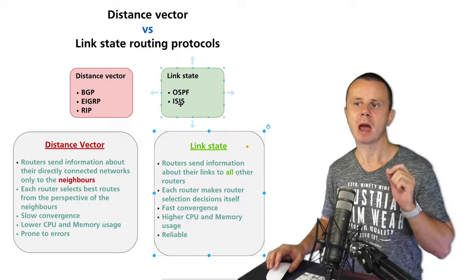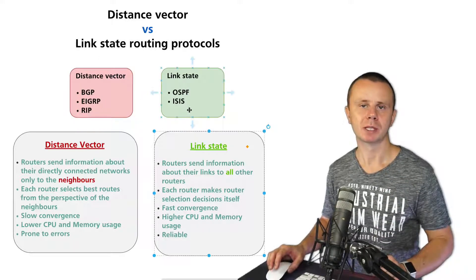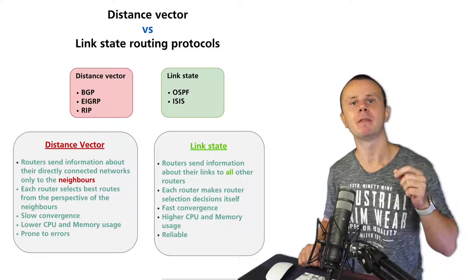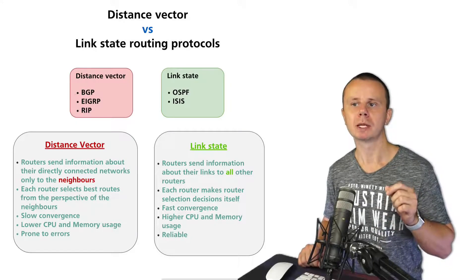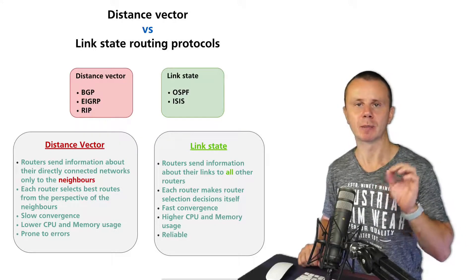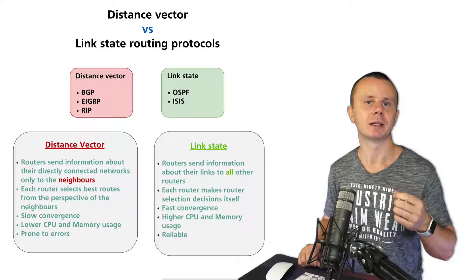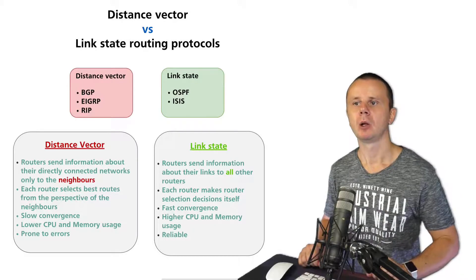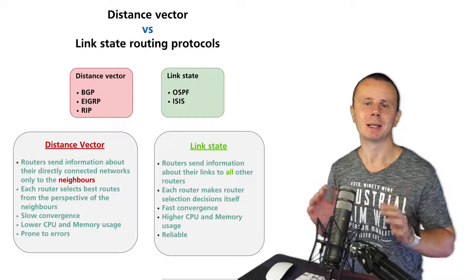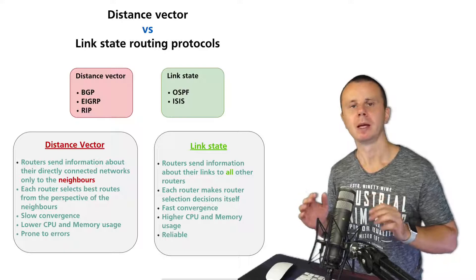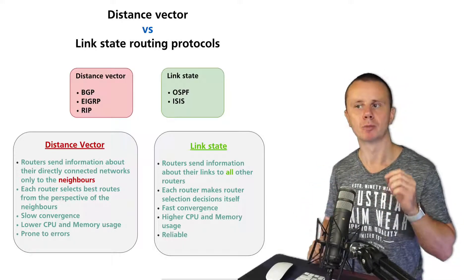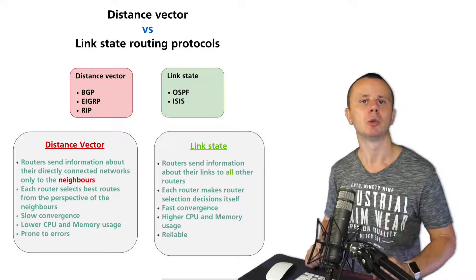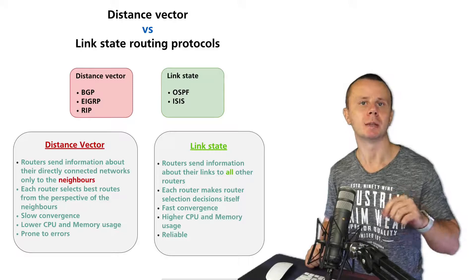All the mentioned protocols are capable of exchanging both IPv4 and IPv6 prefixes. For some protocols, there are different versions that work with different network layer protocols — IPv4 or IPv6. To summarize, link state is more sophisticated, and the most popular choice is OSPF, which is an IGP protocol used inside an autonomous system. You can also use a distance vector routing protocol when needed.